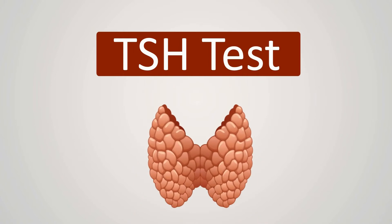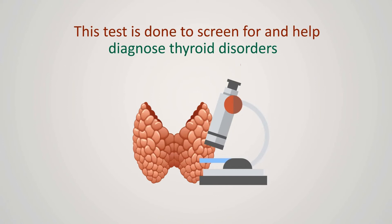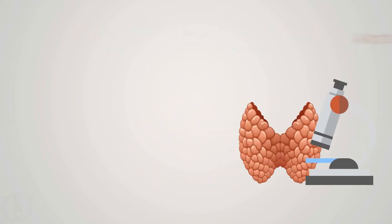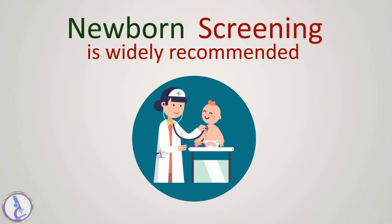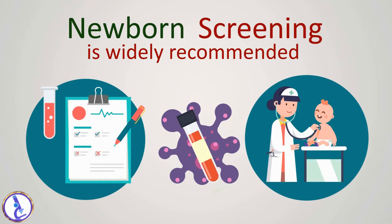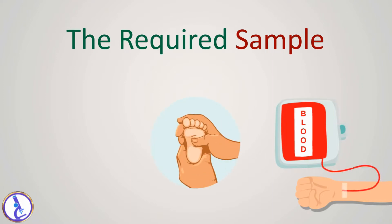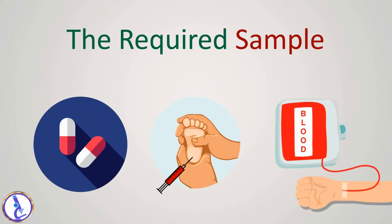The thyroid stimulating hormone TSH test is done to screen for and help diagnose thyroid disorders and to monitor its treatment. Newborn screening is also widely recommended. This test measures the amount of TSH in the blood. The required sample is a blood sample obtained from a needle placed in a vein in the arm, or from pricking the heel of an infant. It is recommended to tell your health practitioner about any drugs you are taking before the test.